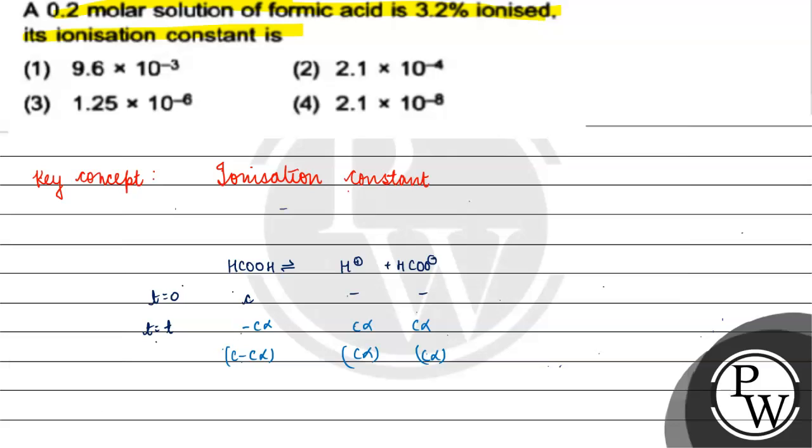Now we write the ionization constant. Ka equals HCOO⁻ concentration times H⁺ concentration divided by HCOOH concentration, which is Cα times Cα divided by (C-Cα).